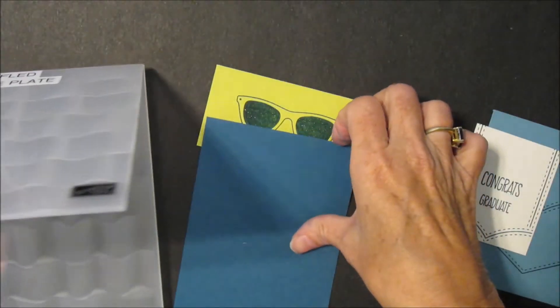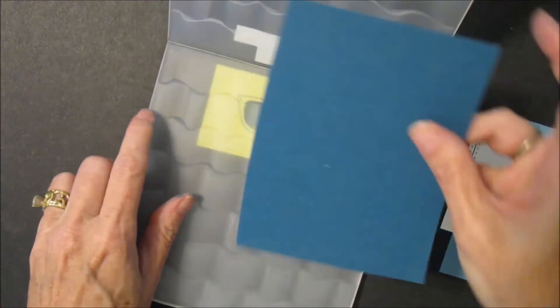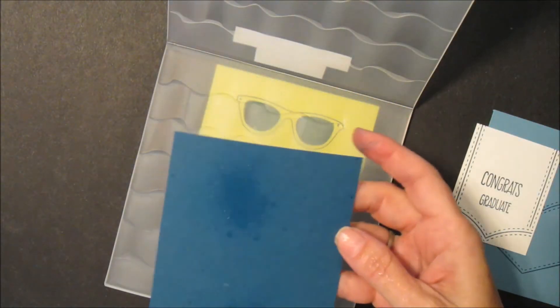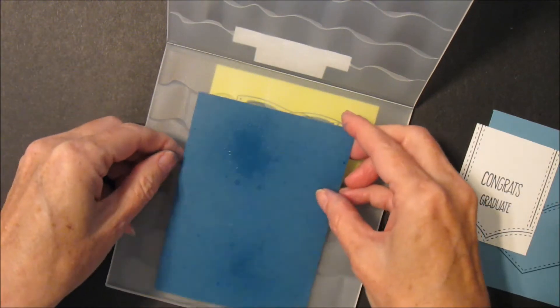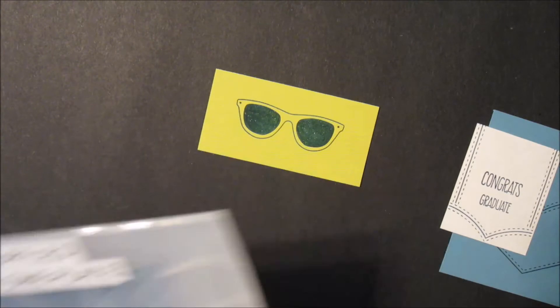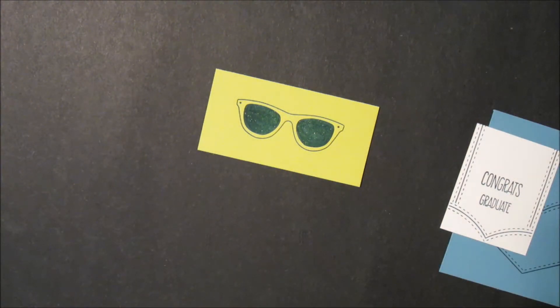So we want to mist our paper first. Lay that down in and run that through the Big Shot. And again I'm going to remind you that you only use one plate.